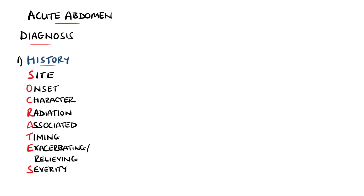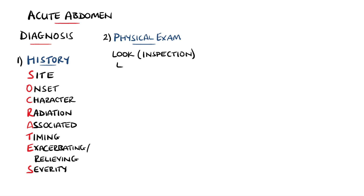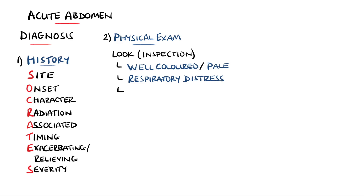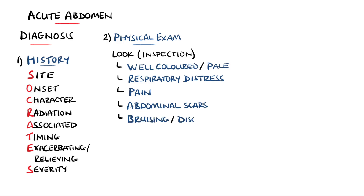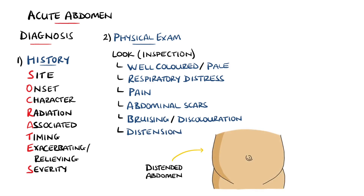To go alongside the history, a physical exam can help narrow down the causes. Following the look, listen, and feel method, a general inspection of the patient can be performed. Are they well-coloured or pale? Are they struggling to breathe? Are they in visible pain? Are there any abdominal scars that may indicate previous surgery, predisposing to an obstruction? Is there any abdominal discolouration, bruising, or distension?